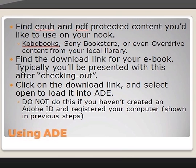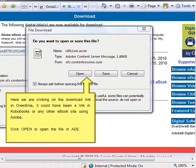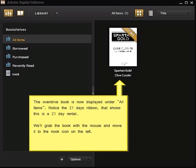Now that you have ADE fully configured, you're ready to find EPUB and PDF protected content for your Nook. You can use Kobo Books, the Sony Bookstore, or OverDrive content from your local library — they all work pretty much the same way. Once you go through the process to get the book, you'll be given a download link. When you click on that download link, it will ask you if you want to open or save the file — click Open. That will load the content into ADE. Here we're clicking a download link in OverDrive; it could have been a link in Kobo Books or any other ebook site using Adobe Copy Protection Tools. The OverDrive book is now displayed under All Items. Notice the 21 Day Ribbon — that shows this is a 21-day rental, and after that time period the book will no longer be readable on your Nook.